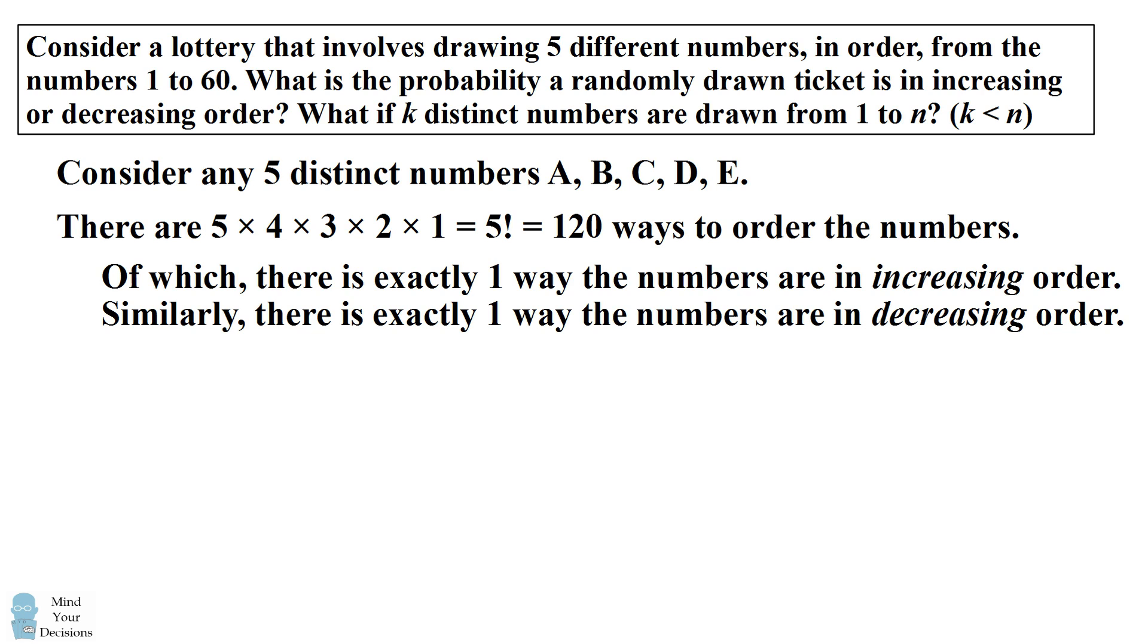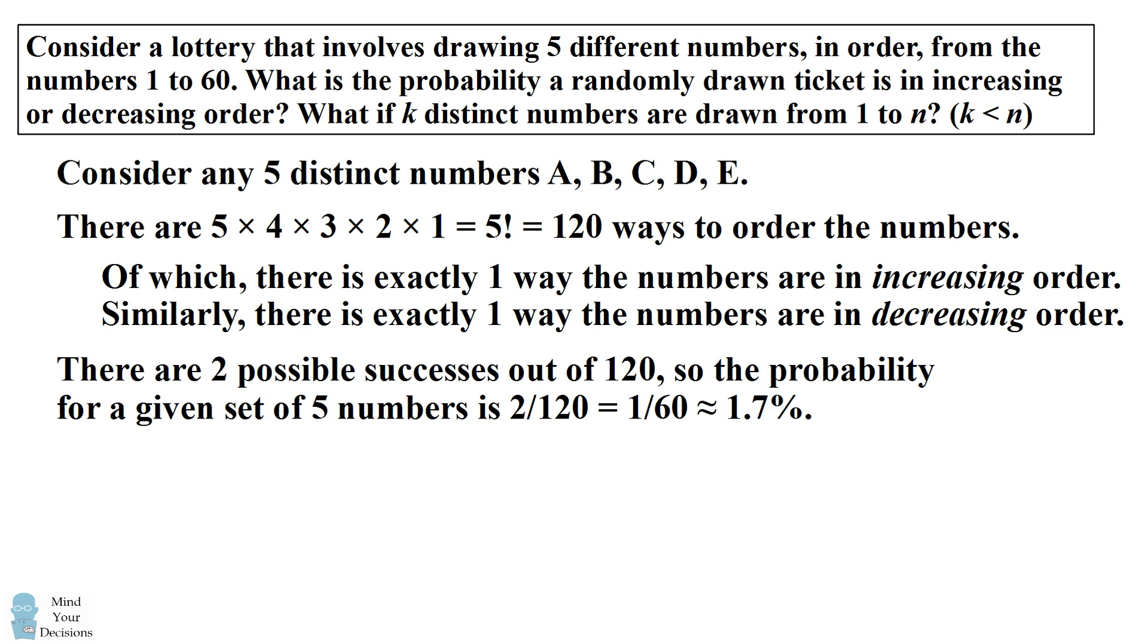So for any five particular numbers, there are two ways to have them in either increasing or decreasing order out of a possible 120 ways that you could order them. So the probability for a given set of five numbers is 2 out of 120, or 1 out of 60, which is approximately 1.7%.